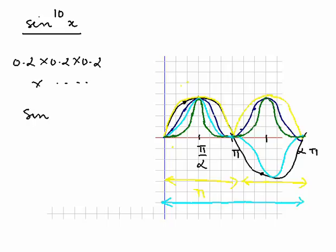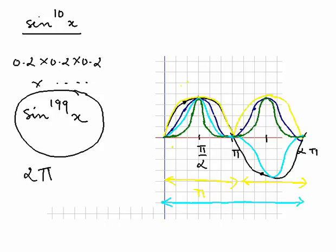What are you going to answer if someone asks you this question? The period of sine to the power 10x. Yes, 2 pi is absolutely correct.